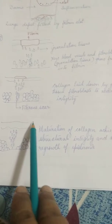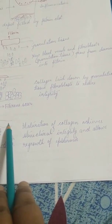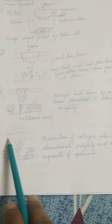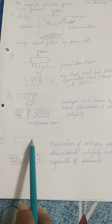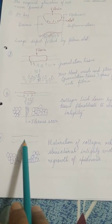And at the last, what happens is the maturation of the collagen occur and the integrity of the cell, though achieved, but usually the fibrous growth is observed.